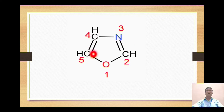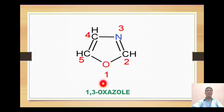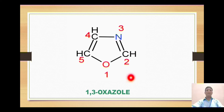Besides the heteroatoms, we have three carbons attached with three hydrogens, so its molecular formula is C3H3NO. According to the nomenclature of a heterocyclic system, this is called 1,3-oxazole. The priority goes to the oxygen, so position one is 'oxa' and position three is 'aza', which is the prefix for nitrogen. For the five-membered ring we use the suffix 'ole', giving us 1,3-oxazole.